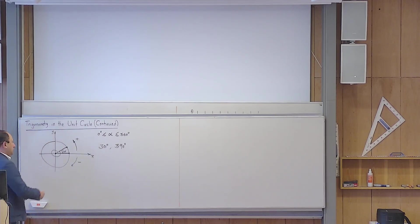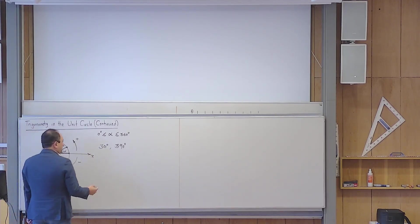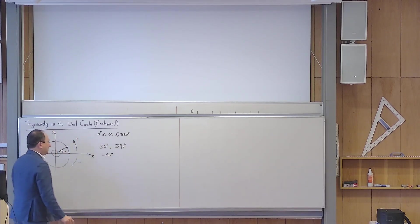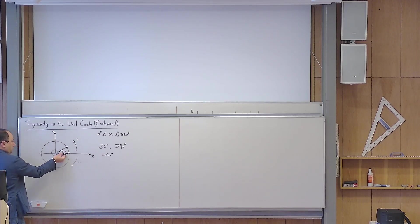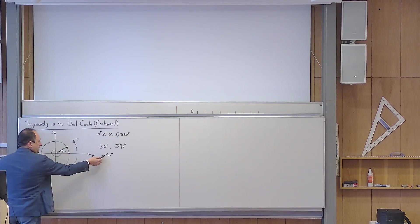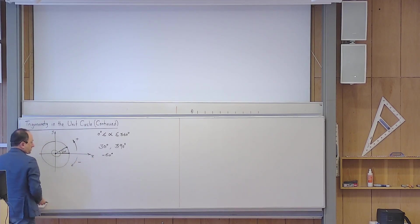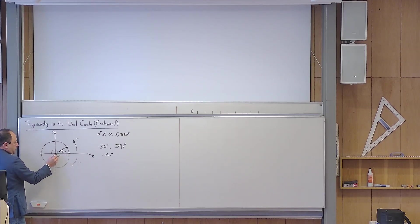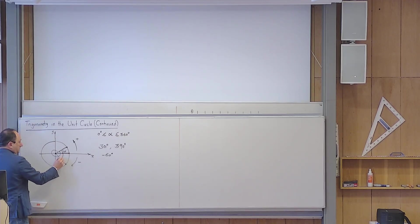We could also talk about negative angles. For example, minus 60 degrees — what does this mean? Again, I start from here. I start rotating about the origin by 60 degrees, but in the negative direction. So I start from here and go 60 degrees in the negative direction. I will end up somewhere here, and this angle is negative 60 degrees. The end point is here.